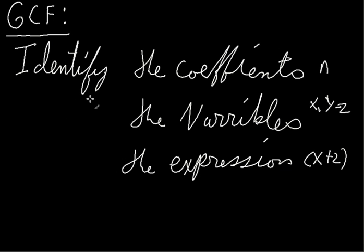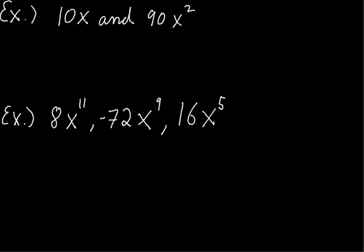So greatest common factor, to be able to factor it, you want to identify the coefficients, the variables like x, y, z, and maybe even an expression like a binomial like x plus 2. So let's take a look at an example and see how this works.